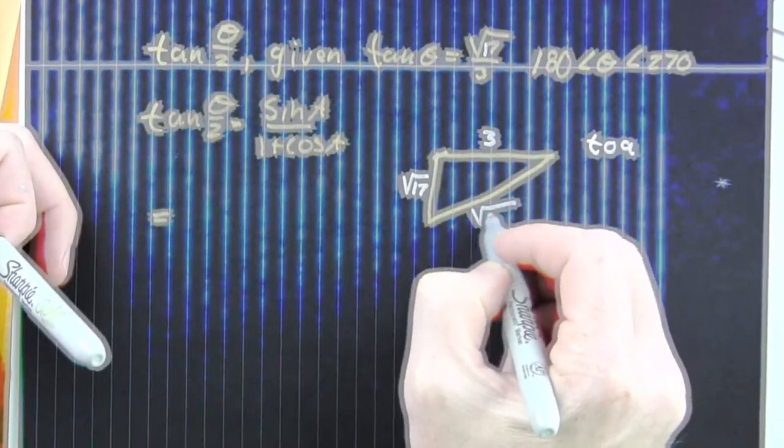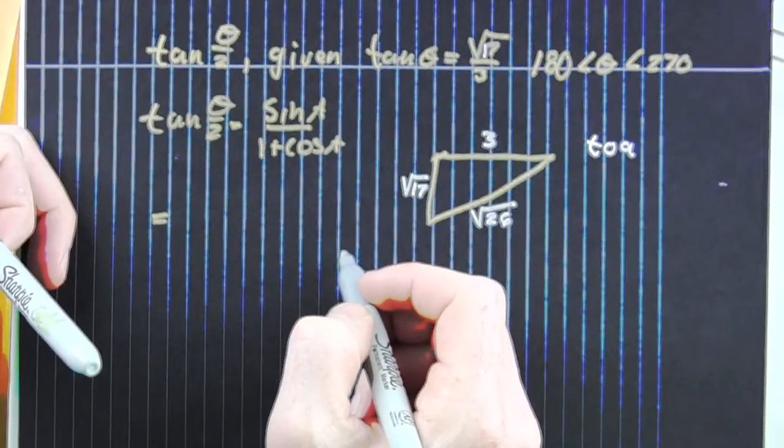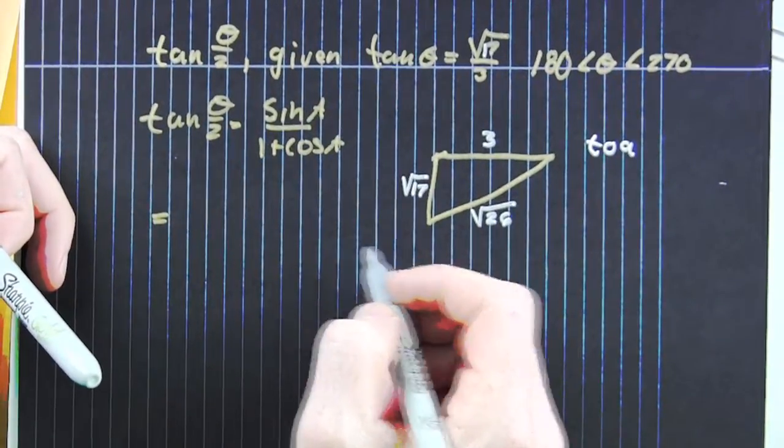We create that triangle with our given information. Pythagorean completes it.